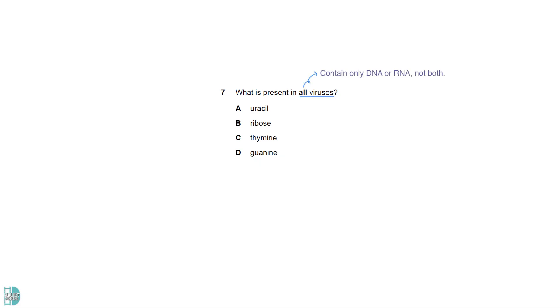Viruses only contain either DNA or RNA. The first 3 options are found only in DNA or RNA. They won't be found in all viruses. Only guanine can be found in both.